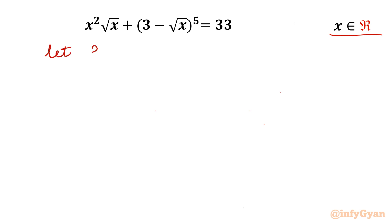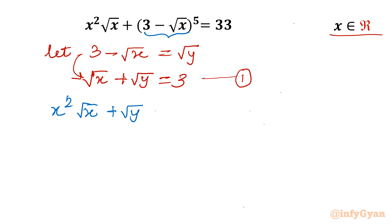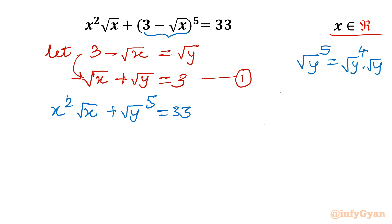Let us get started by considering the substitution 3 minus √x = √y. From this substitution equation I can write √x + √y = 3 — this will be equation number 1. Applying this substitution to our original equation, it becomes x times (√x + √y)^5 = 33. Now, (√y)^5 can be written as (√y)^4 times √y, which simplifies to y² times √y.